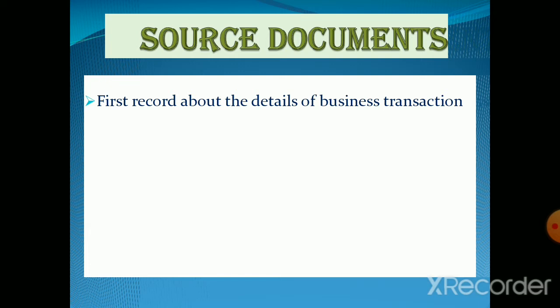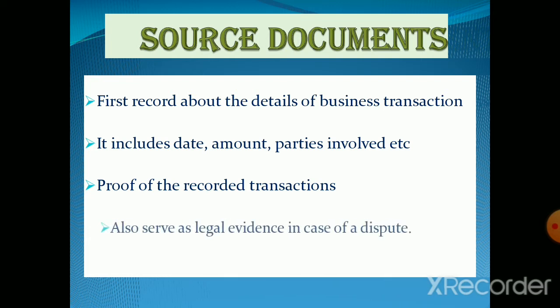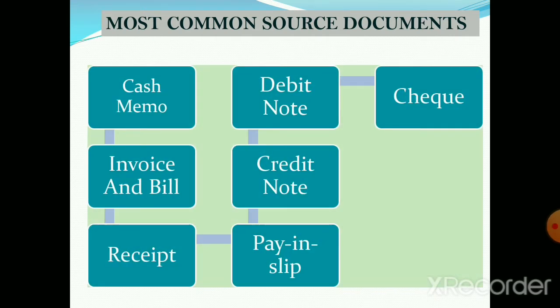Source documents include the date, amount, parties involved, and the nature of the transaction. According to the verifiable objective principle of accounting, each transaction recorded in the books of account should have proof to support it. Source documents are also considered proof of recorded transactions. These documents are required for audit and tax assessment, and they serve as legal evidence in case of dispute. The most common source documents are cash memo, invoice and bill, receipt, debit note, credit note, pay-in slip, and cheque.